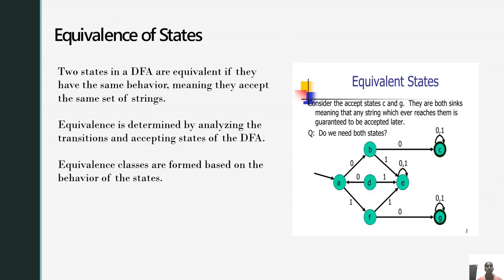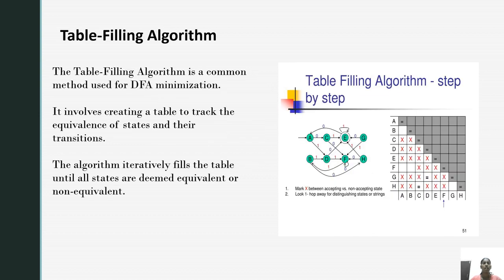Next, let us see the equivalence of states. Two states in a DFA are equivalent if they have the same behavior, meaning they accept the same set of strings. Equivalence is determined by analyzing the transitions and accepting states of DFA. Equivalence classes are formed based on the behavior of the states.